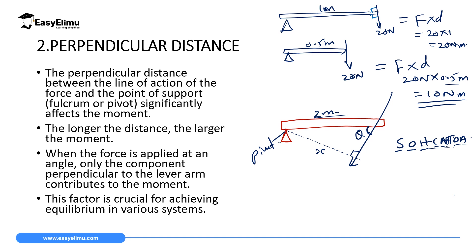Once you identify that perpendicular line, that is the line which is 90 degrees to the point of support. If you know the magnitude of the force and the distance, you can use the cosine rule or another rule to get the distance that is perpendicular to the point of support. When you decrease the angle below 90 degrees, the moment decreases; if you increase it above 90 degrees, the moment also decreases. Maximum moment occurs when the angle is exactly 90 degrees.